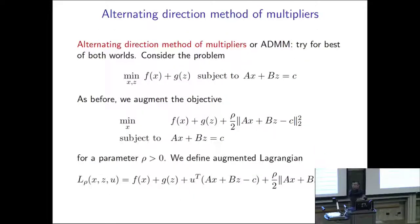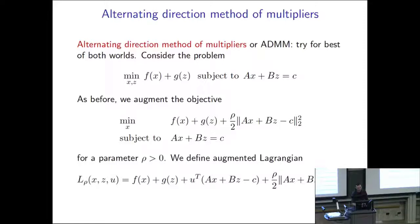So in comes ADMM — the alternating direction method of multipliers. Think of augmented Lagrangian as the method of multipliers; this is a modification. The name 'alternating direction' tells the story. ADMM is trying for the best of both worlds: retaining the convergence of the method of multipliers while also retaining the decomposability of dual decomposition. Just like coordinate descent, this is actually an old method — people in the 70s were looking at ADMM. But just like coordinate descent, it didn't become popular until recently, I'd say in the last ten years.